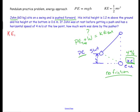Let's start with finding the KE at the bottom because that's a pretty easy number to find. You see my equation written up here, it's one half mv squared. John has a mass of 60 kilograms, so we have one half times 60 kg.